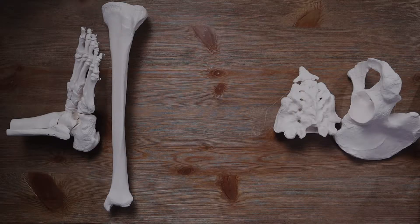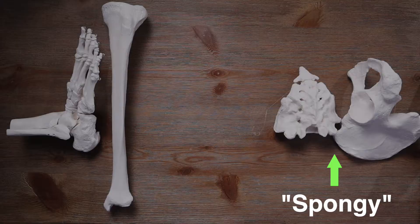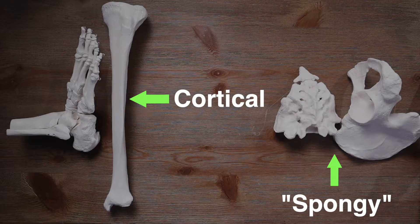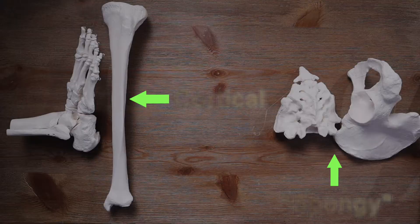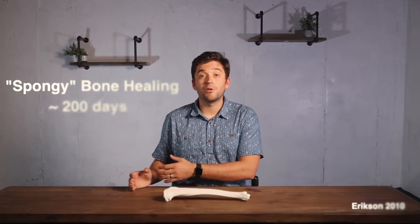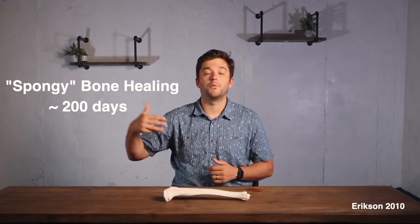Bones that are more cancellous or spongy in nature are generally higher risk because they have a harder time healing, take longer, and often there are more contributing factors to why that injury happened. Injuries to cortical bone tend to heal a lot quicker. That's why someone with a metatarsal or tibial stress fracture tends to get back to running quicker than someone with a sacral or femoral neck stress fracture. It takes between four weeks to three months for cortical bone to completely turn over, whereas spongy bone can take around 200 days to completely turn over and recover.